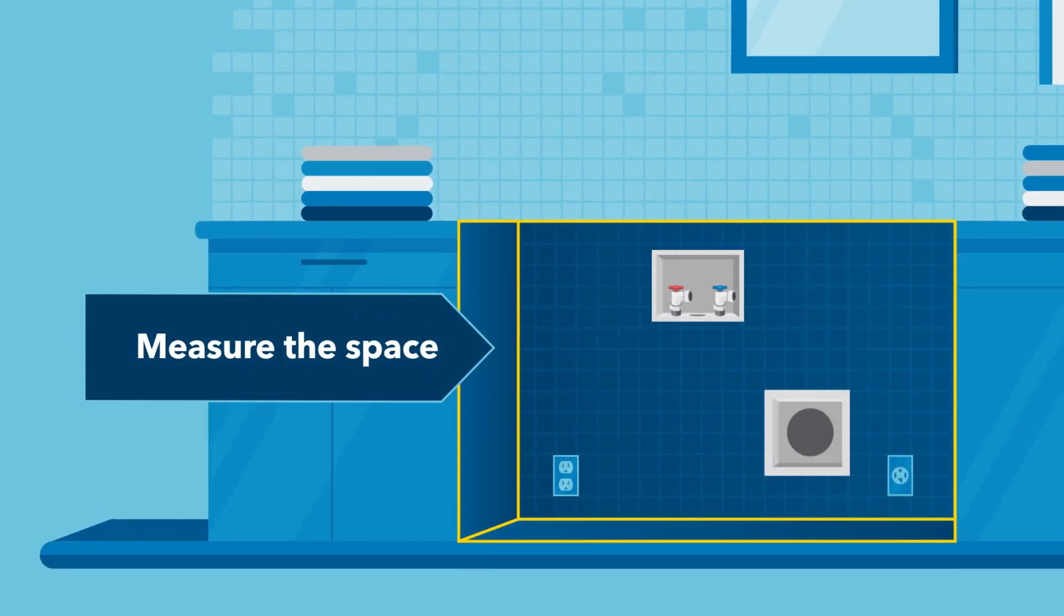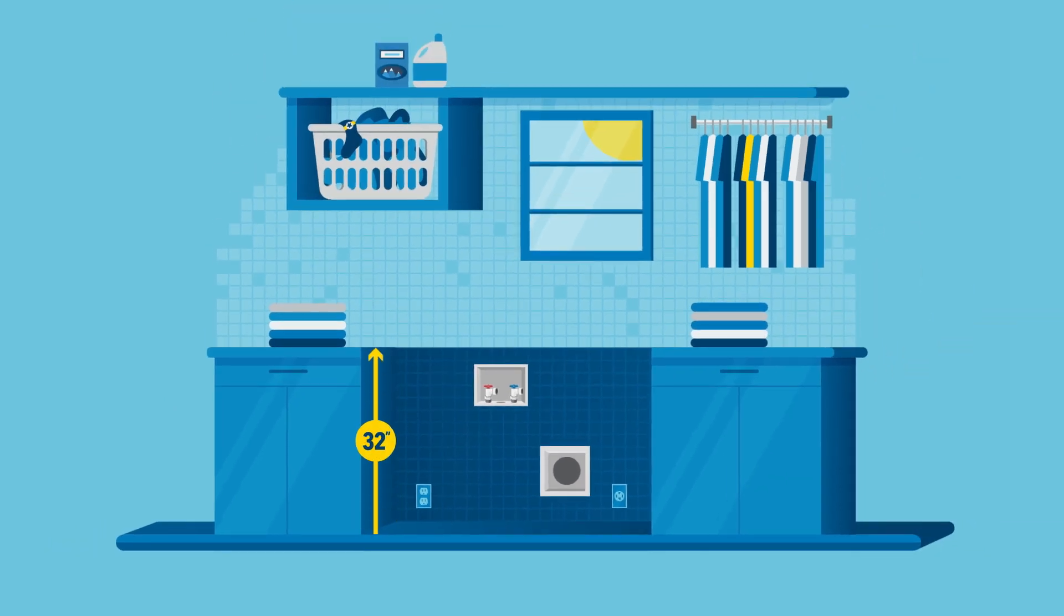For starters, measure the height, width, and depth of the space where your washer and dryer will live. Be sure to note the distance from the floor to any adjacent countertops and to the bottom of any overhead shelves or cabinets.